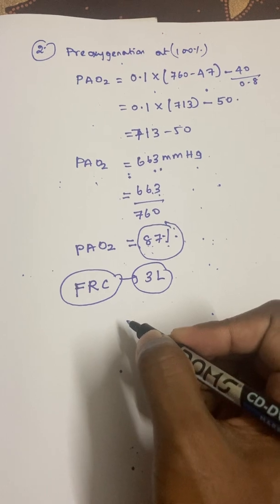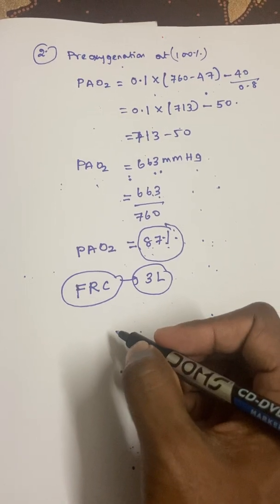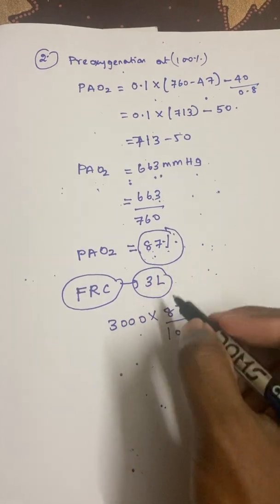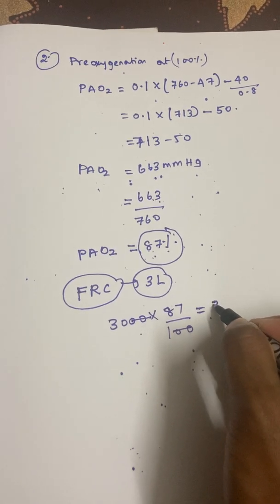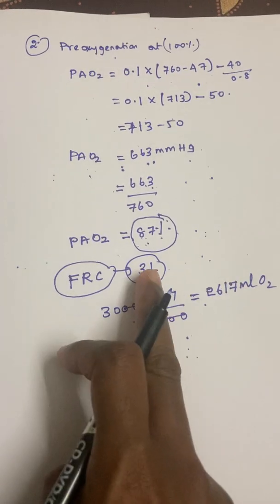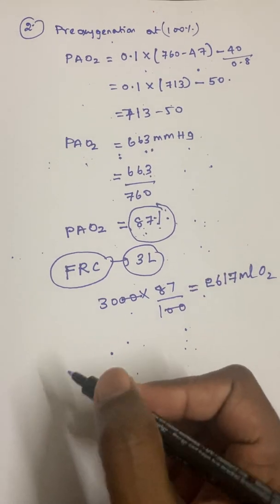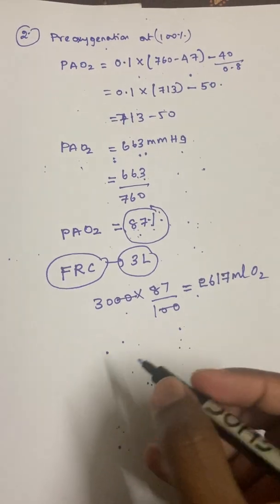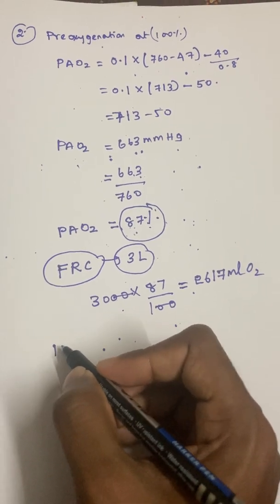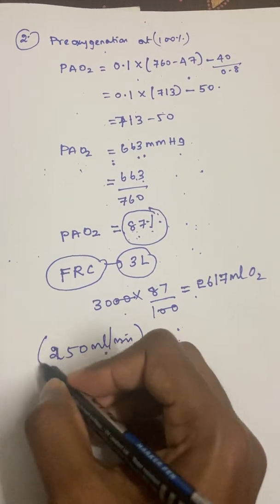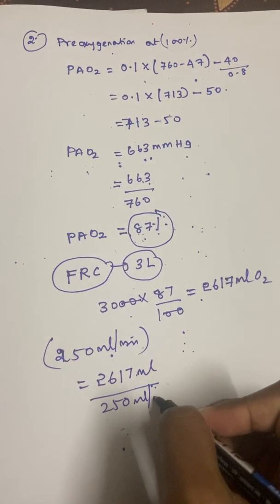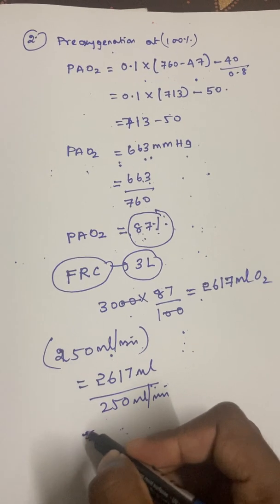With FRC still at 3 liters (3000 ml), and now 87% filled with oxygen: 3000 × 87/100 ≈ 2,610 ml of O2 in the FRC. So the pre-oxygenated patient has approximately 2,617 ml of O2 in their FRC compared to only 390 ml when breathing room air.